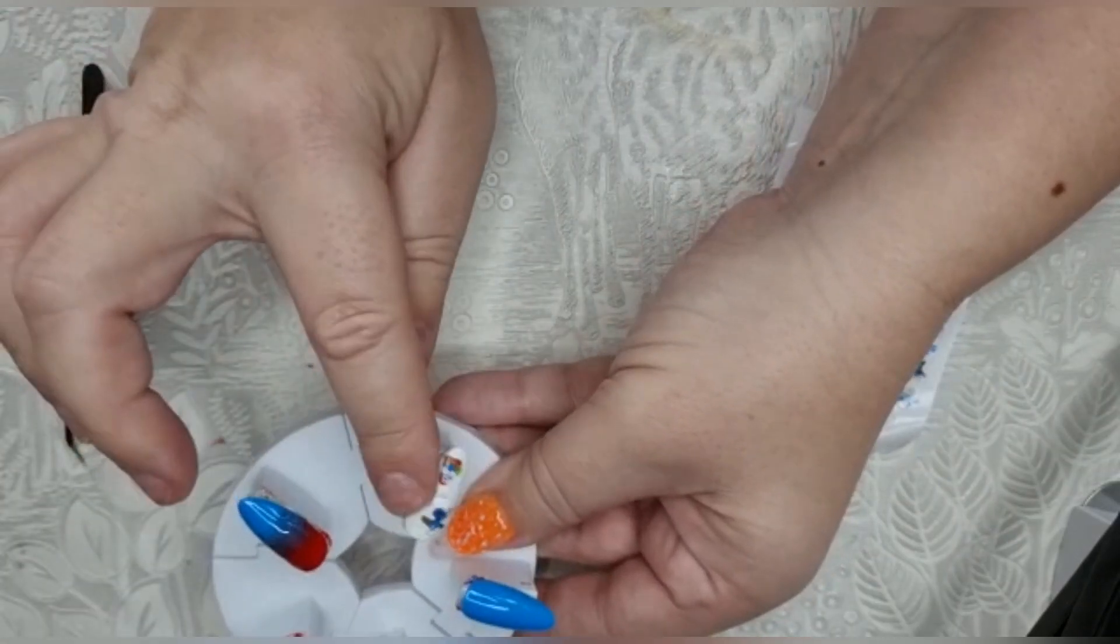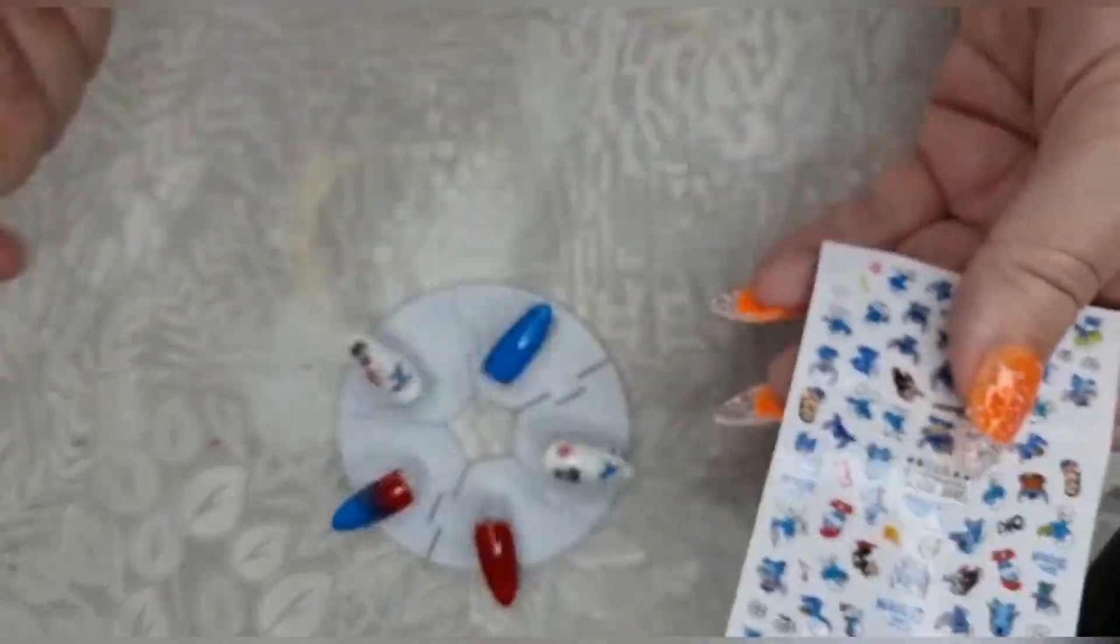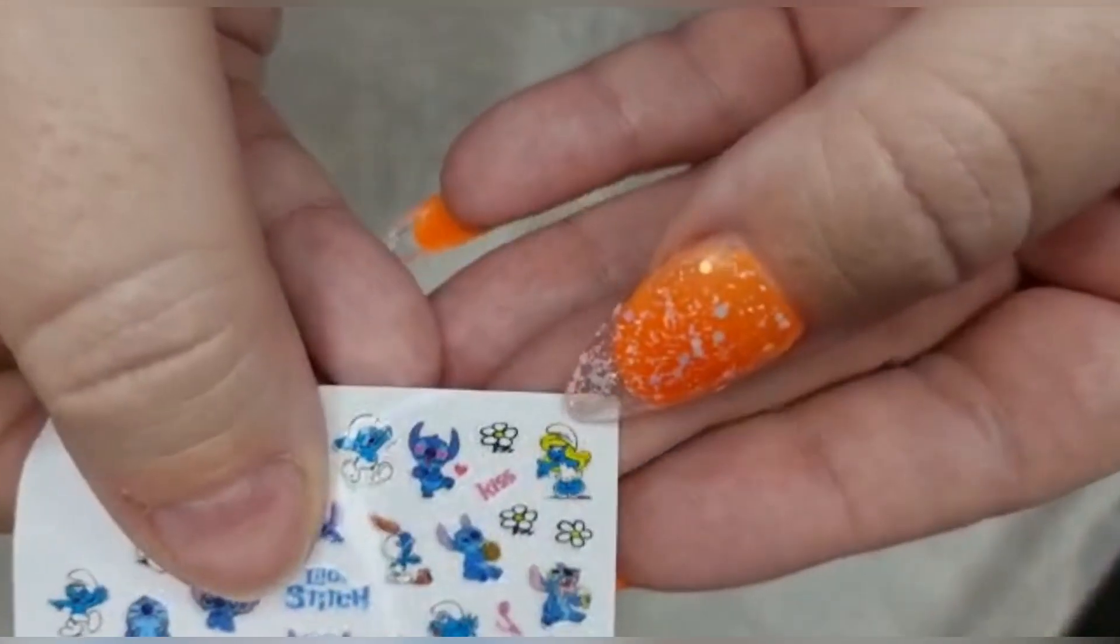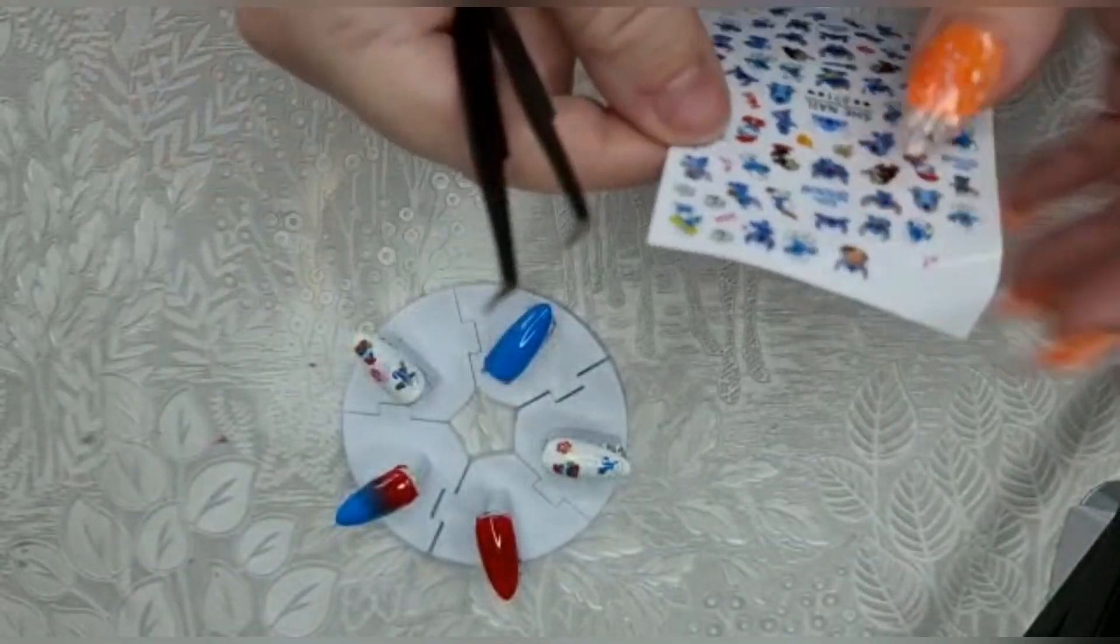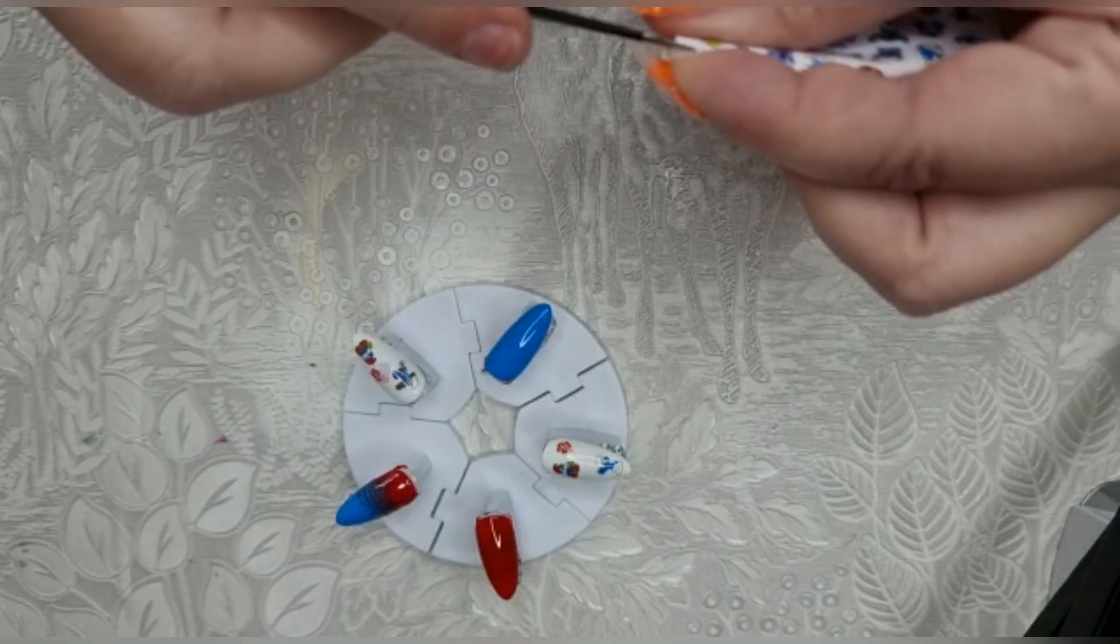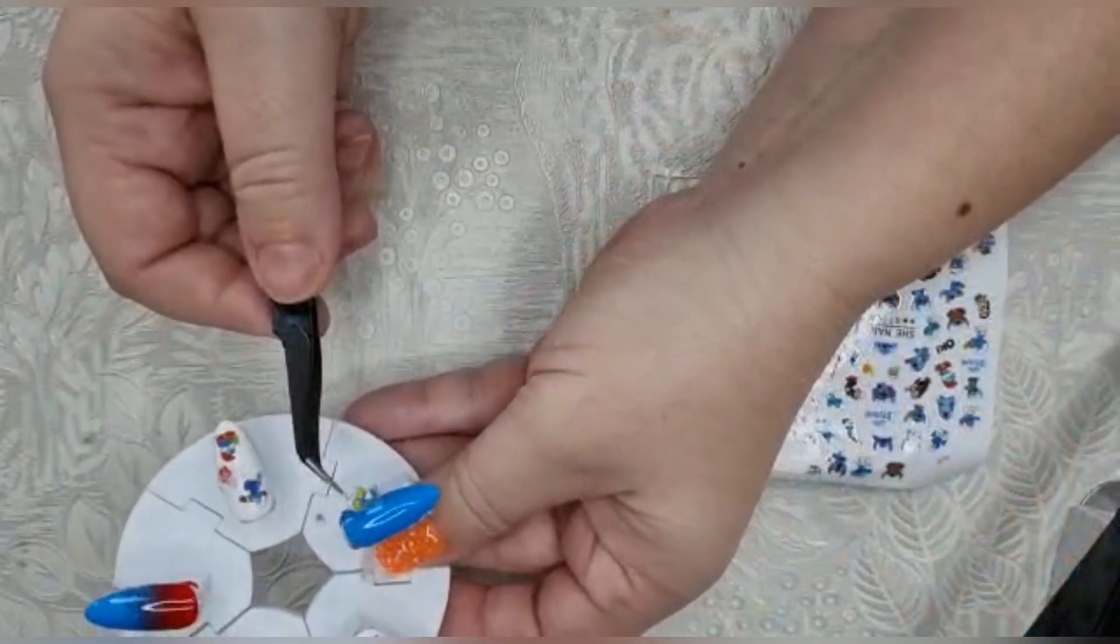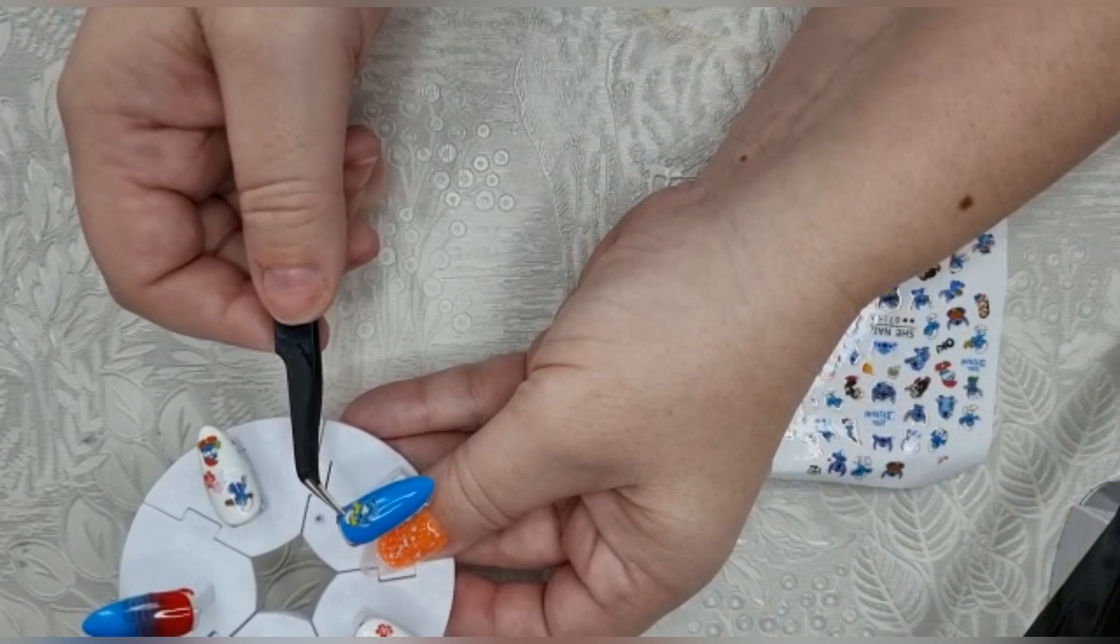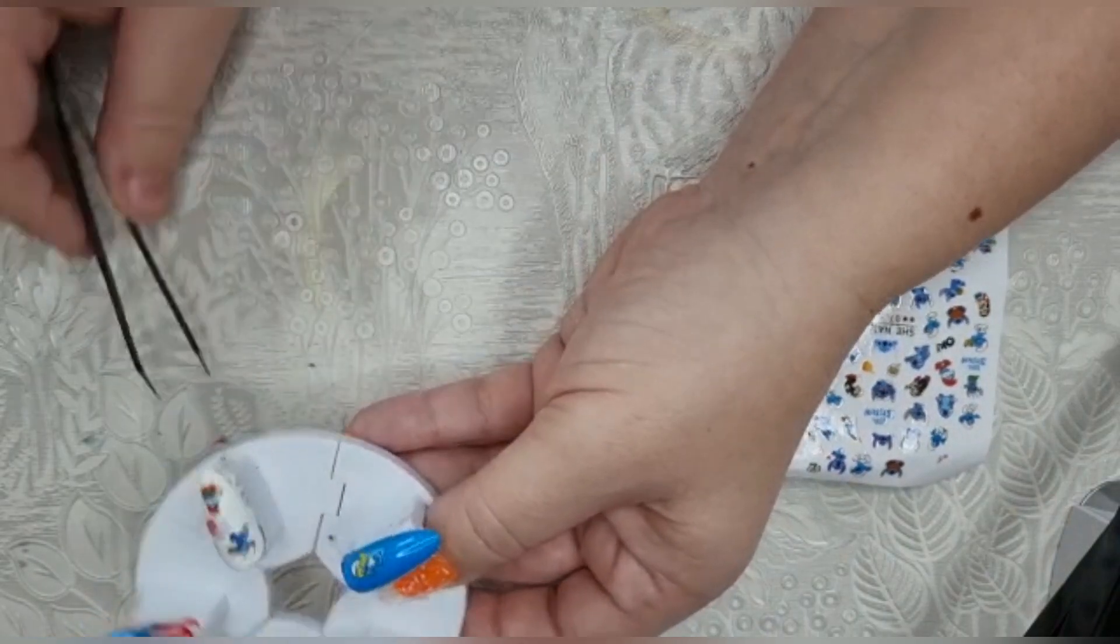Pop those there. There we go. Right, this one here is a little girl and she's got yellow hair, so I think that might be nice there because it will make her stand out a bit. Mrs. Smurf or whatever they're called. So I'll pop her over here like that.